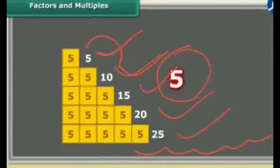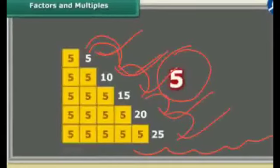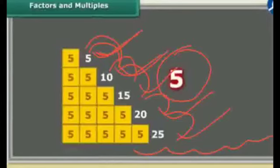These are the multiples of 5. One time gives 5, two times gives 10, three times gives 15, four times gives 20, five times gives 25. So all these numbers are multiples of 5. Multiples are always greater than or equal to the number.